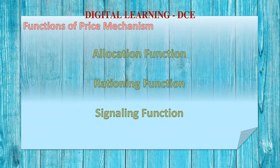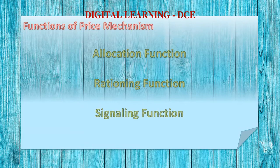Similarly, the signaling function signals producers, business units, firms, and factories to make decisions about what to produce and what not to produce. If demand for certain goods gradually keeps falling, it implies people are no longer interested in purchasing that product, and the price falls accordingly. Producers get an indication whether to produce that product or not. If the price of a product increases, it signals producers whether to expand production of that product, and if they have the capacity, they will do so to gain the benefits of the price increase.